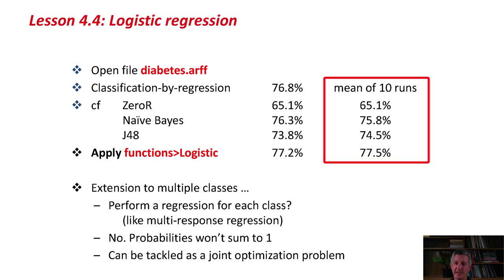ZeroR stays the same, of course. It's 65.1%. It produces the same accuracy each run. Naive Bayes and J48 are different. Here, logistic regression gets an average of 77.5%, which is appreciably better than the other figures in this column.